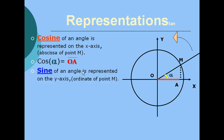Sine of an angle is represented on the y-axis, which is the ordinate of point M. We project M onto the y-axis, which is the sine axis, and we get segment OB as the result. Segment OB is equal to MA, since OBMA forms a rectangle.